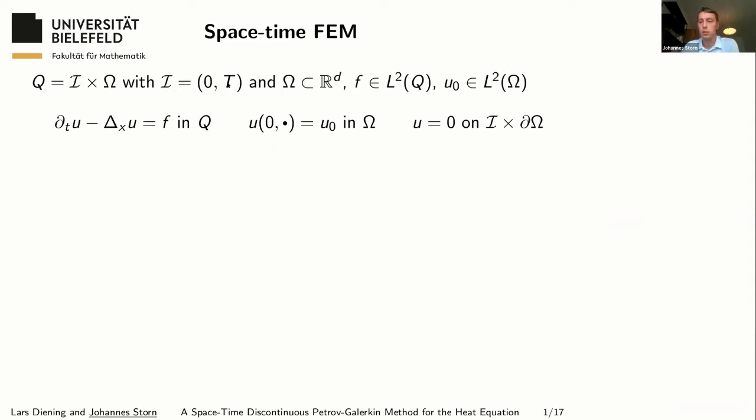We have some right-hand side f that is square integrable with respect to the entire time-space cylinder. We have some initial data which is in L2. Moreover, we assume homogeneous Dirichlet boundary conditions on the lateral boundary.